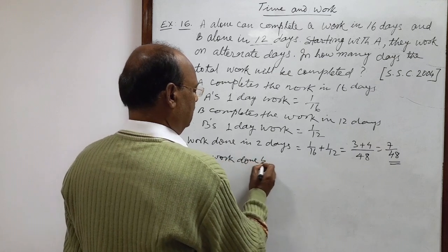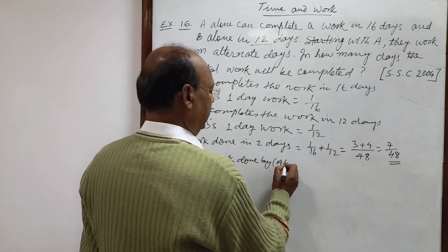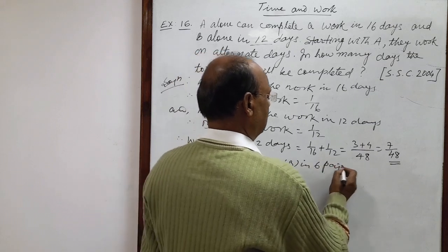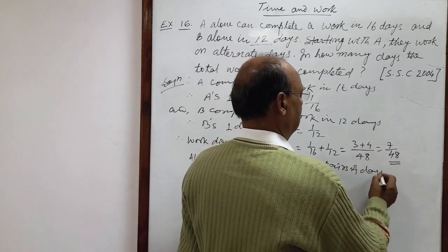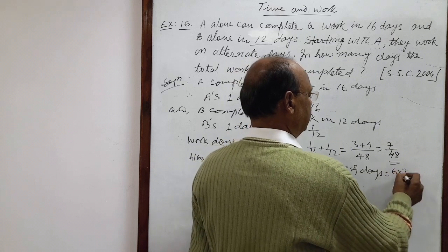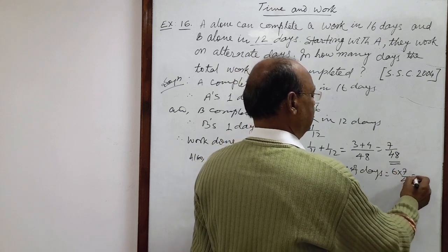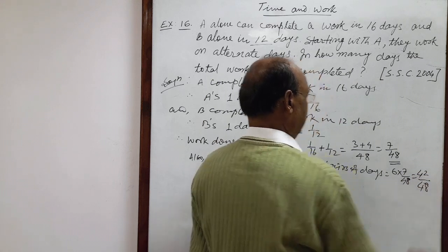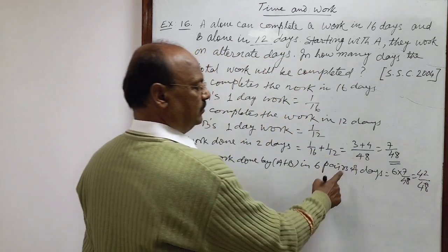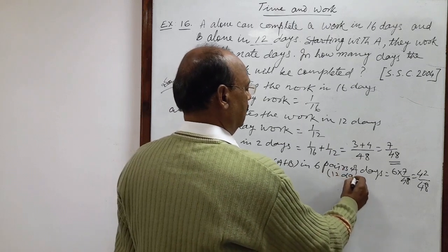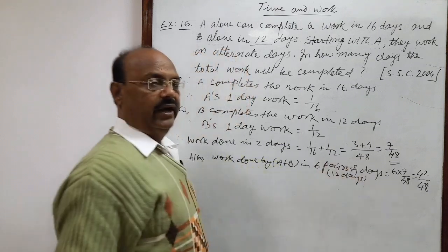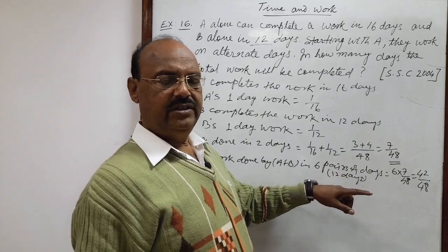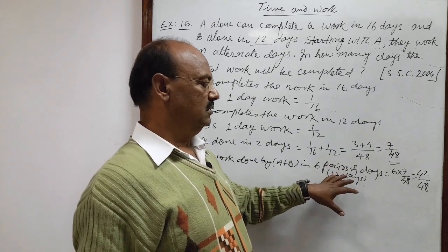Work done by A plus B in 6 pairs of days is equal to 6 into 7/48. This is equal to 42/48. 6 pairs of days means this is equal to 12 days. And after 12 days who will work again? A, is not it? 6 pairs of work has been completed.